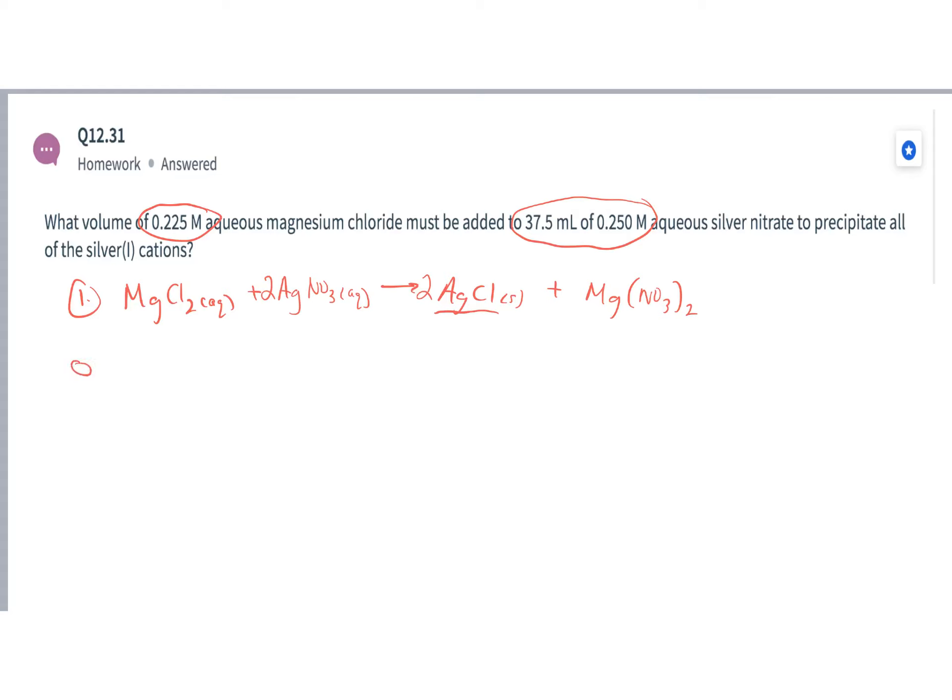I have a 0.25 molar solution, which is moles, right? The molarity is moles per liter. And of that solution, I have 0.0375 liters of that solution, right? If I did the unit conversion,